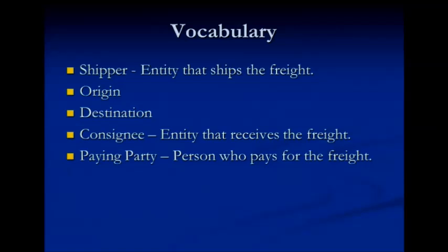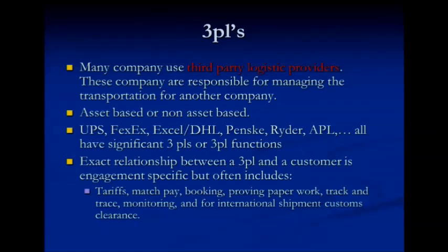Vocabulary: the shipper is the person who ships the freight. Origin and destination are self-explanatory. The consignee is the entity that receives the freight, and the paying party is the one who pays for it. Many companies today use what they call third-party logistics providers — 3PLs — companies responsible for managing transportation for another company. Some have assets, some do not. UPS, FedEx, Excel, DHL, Penske, Ryder, and APL all have significant 3PLs or function like a 3PL.